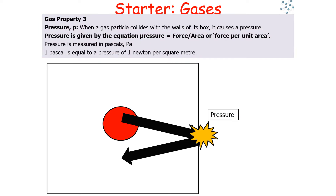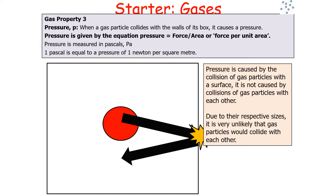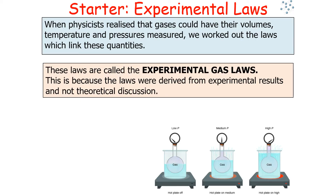The third property of a gas is the pressure, which is given the symbol P. When a gas particle collides with the walls of its box, it causes a pressure. Pressure is given by the equation force over area — the force per unit area exerted by the gas. Pressure is measured in pascals, where one pascal is equal to one newton per square metre. Pressure is caused by the collisions of the gas particles with the surface of the container, not by collisions of gas particles with each other, as it's very unlikely that gas particles would collide with each other.